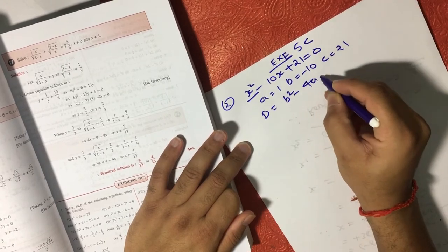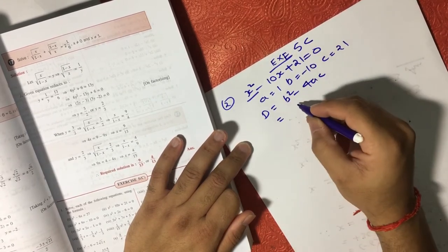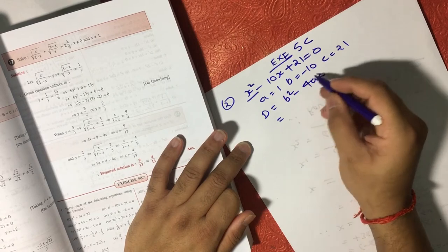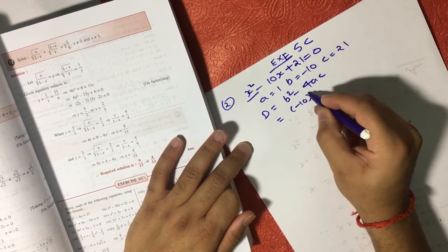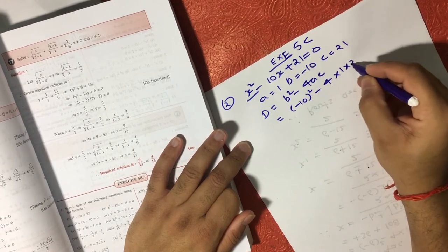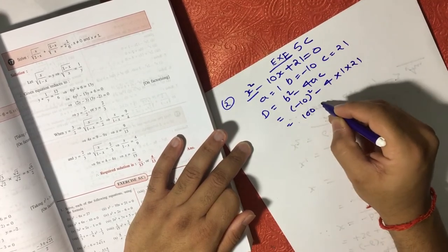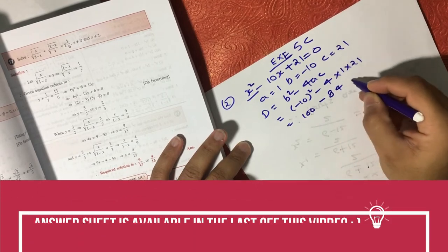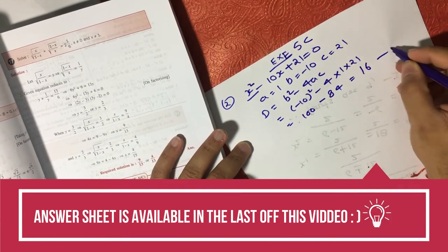If you put the value, b² is -10, so (-10)² - 4(1)(21). This will become 100 - 84 = 16. So that is your equation number 1.